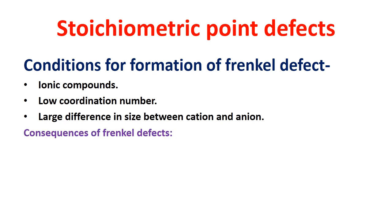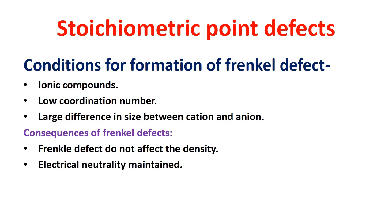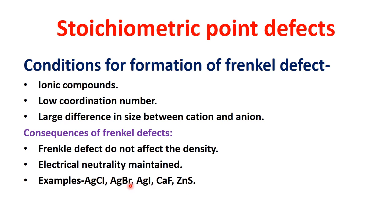Since no ions are missing from the crystal lattice as a whole, Frenkel defects do not affect the density. Because equal numbers of cations and anions are present, electrical neutrality is maintained. Examples of ionic compounds exhibiting Frenkel defects are AgCl, AgBr, AgI, CaF₂, and ZnS. Frenkel defects are found in silver halides due to the small size of the silver ion, and in zinc sulfide due to the small size of the zinc ion. This concludes our study of crystal defects and the four types of stoichiometric point defects.